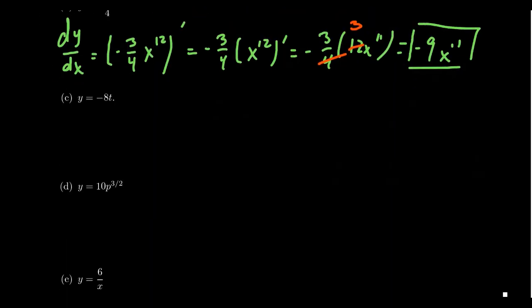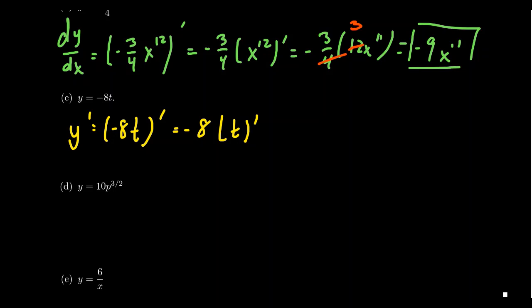Looking at the next one: taking the derivative of negative 8t with respect to t. We take out the negative 8, then take the derivative of t. By the power rule, the derivative of just a single variable gives back a 1. So you end up with negative 8 as the derivative — it's a constant.